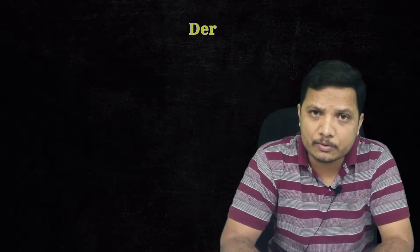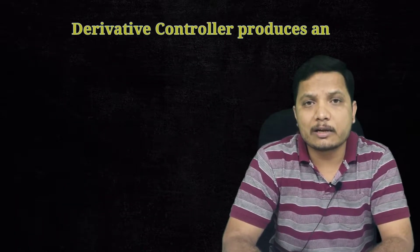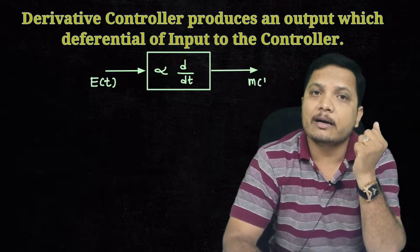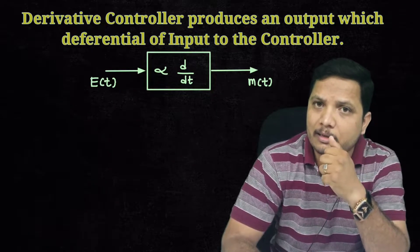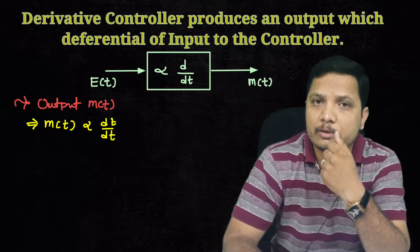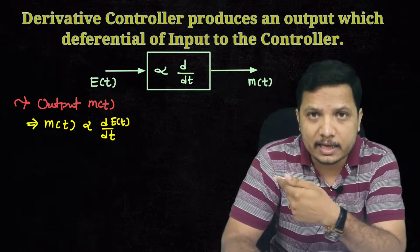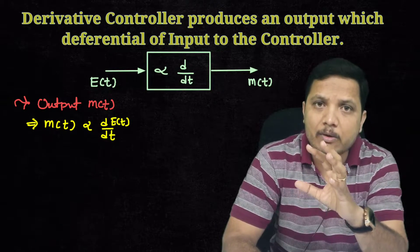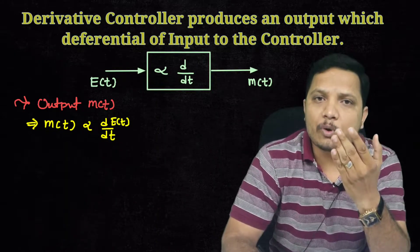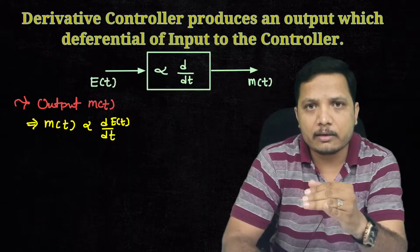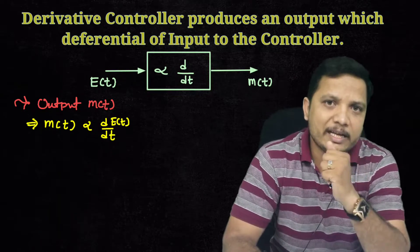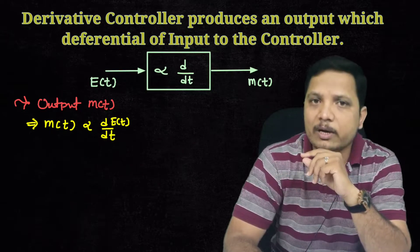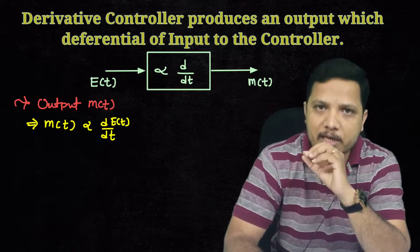The basic definition: the output of a derivative controller will be the differentiation of input with respect to time. So if I have a derivative controller, its output will be the differentiation of the input. If the input is E(t), then the output will be the differentiation of E(t) with respect to time. That is how the derivative controller functions. Let us understand this in terms of frequency domain analysis. In a derivative controller, the output is directly proportional to the differentiation of input with respect to time.